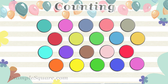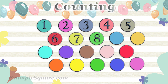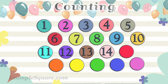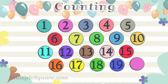How many circle shapes are there? One, two, three, four, five, six, seven, eight, nine, ten, eleven, twelve, thirteen, fourteen, fifteen, sixteen, seventeen, eighteen, nineteen, twenty. There are twenty circle shapes.